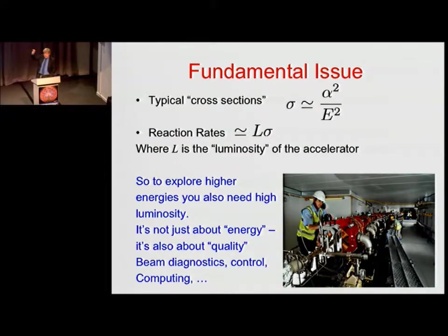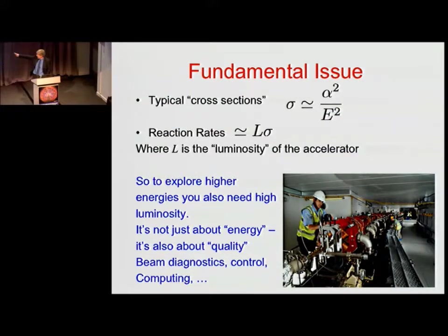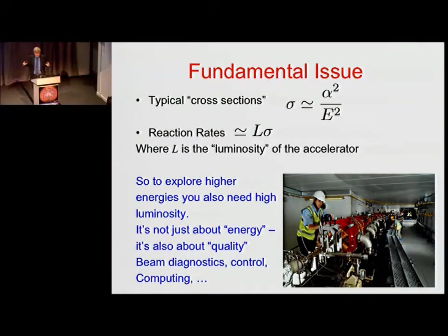If we want to get to high energies, we have to increase the luminosity — accelerator speak for intense beams. It's not just about energy; it's also about quality. To get intense beams, they have to be what's called cold — the particles can't be jiggling around too much inside the beams or you can't squeeze them tightly enough to collide with high intensity. That requires a lot of beam diagnostics, which many of you fellows have worked on. Here you can see a typical beamline — the Diamond beamline being constructed — with magnets for focusing, and beam diagnostics to determine what these beams look like and how to make them high quality.